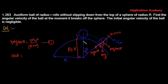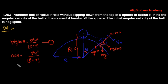Since the ball is in rolling motion, we can write v = rω, where r is the radius of the ball and ω is the angular velocity of the ball. Substituting, cosθ = r²ω² / [g(R + r)]. Since the work of non-conservative forces is zero, we can apply conservation of energy.